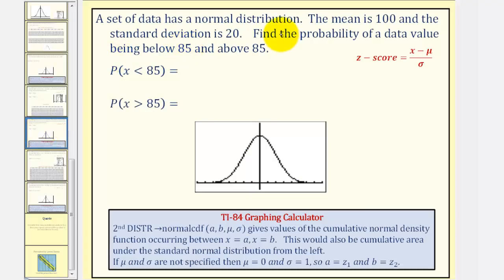A set of data has a normal distribution. The mean is 100, and the standard deviation is 20. We want to find the probability of a data value being below 85 and the probability of a data value being above 85, which we can express as the probability of X being less than 85 and the probability of X being greater than 85.